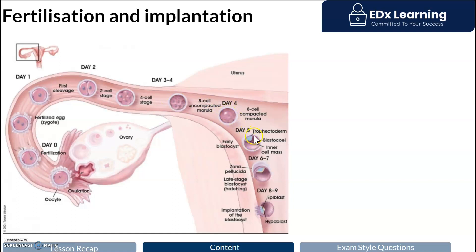When we start getting the accumulation of fluid inside this multicellular zygote, we then call it a blastocyst. About six days after fertilization — approximately one week — we get implantation of the zygote. It is the blastocyst that implants at approximately one week after fertilization.